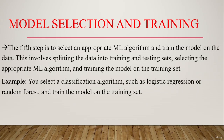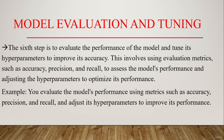The fifth step is model selection and training. We find an appropriate ML algorithm and train the model on the data, splitting the data into training and testing sets, selecting the appropriate algorithm, and training the model on the training set. For example, selecting a classification algorithm like logistic regression or random forest. The sixth step is model evaluation and tuning — evaluating model performance and tuning hyperparameters to improve accuracy, using metrics such as accuracy, precision, and recall.